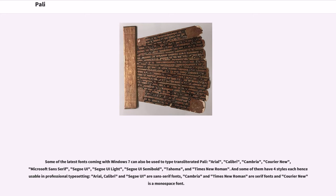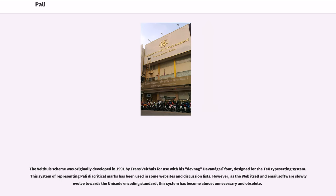Some Unicode fonts freely available for typesetting Romanized Pali include fonts available for Windows 7: Arial, Calibri, Cambria, Courier New, Microsoft Sans Serif, Segoe UI, Segoe UI Light, Segoe UI Semibold, Tahoma, and Times New Roman. Arial, Calibri, and Segoe UI are sans-serif fonts; Cambria and Times New Roman are serif fonts; and Courier New is a monospace font. The Velthuis scheme was originally developed in 1991 by Franz Velthuis for use with a Devanagari font designed for the TeX typesetting system. As the web and email software evolved towards the Unicode encoding standard, this system has become almost unnecessary and obsolete.